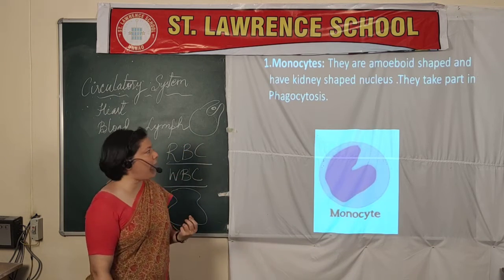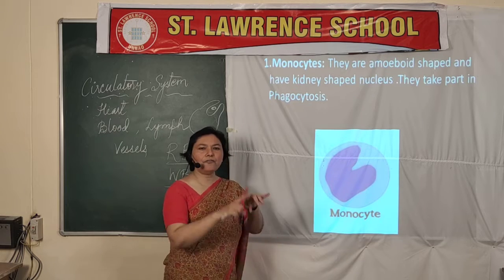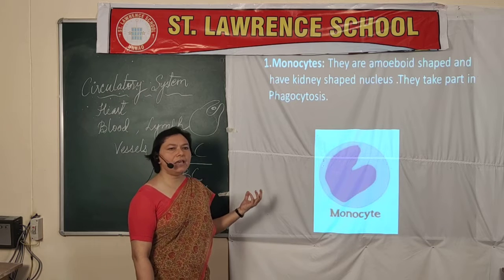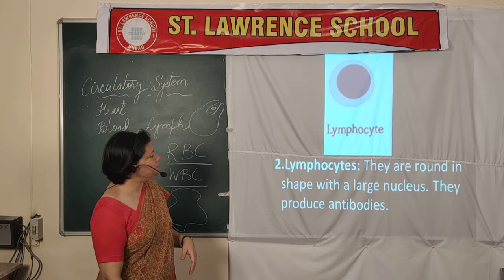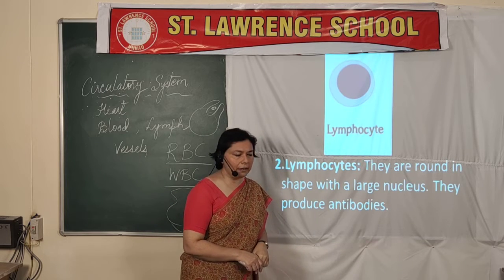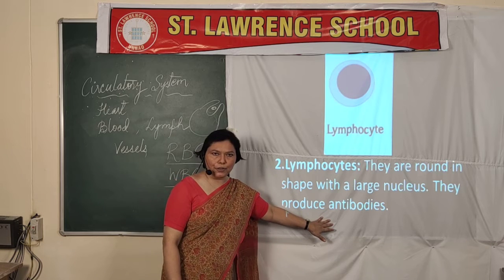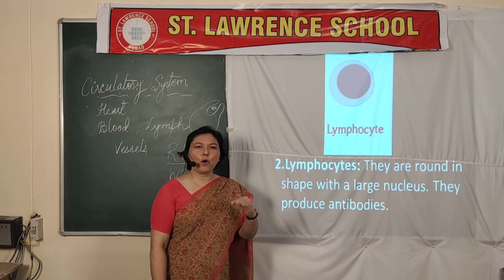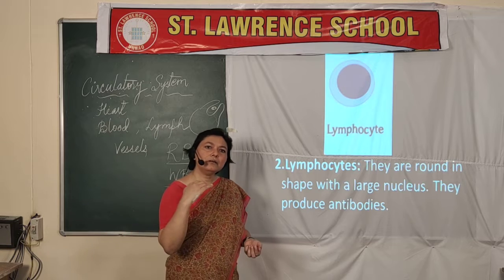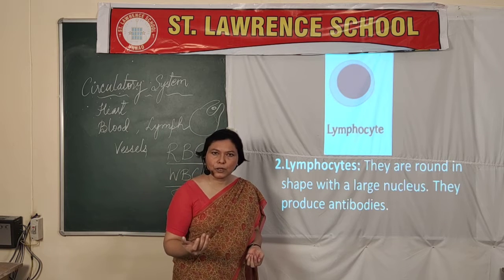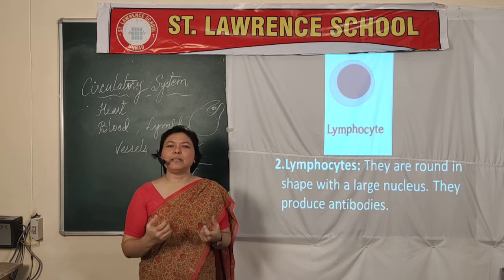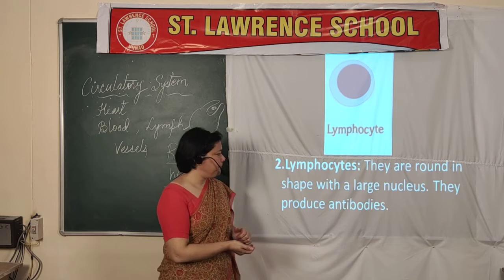The first agranulocyte type is the monocyte. As you can see in the diagram, they have a kidney-shaped nucleus, and they are amoeboid in shape. Their main function is to take part in phagocytosis. Lymphocytes are round in shape, with a large nucleus that covers the entire space of the cell. They produce antibodies. When any germs enter our body, our body proteins fight them, and in this process our body forms antibodies. The next time germs attack, the ready-made antibodies do not allow them to enter our body — they act like strong soldiers formed in advance.